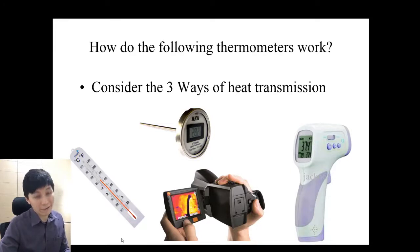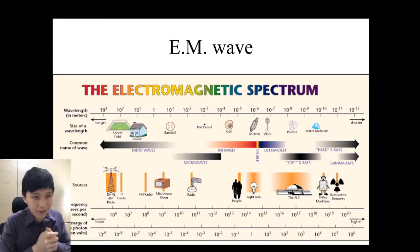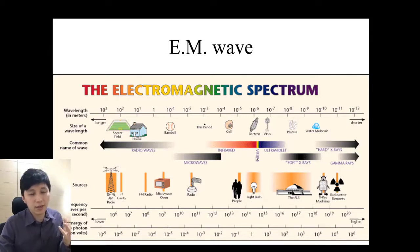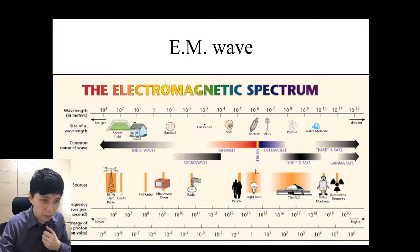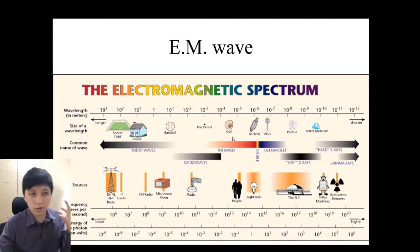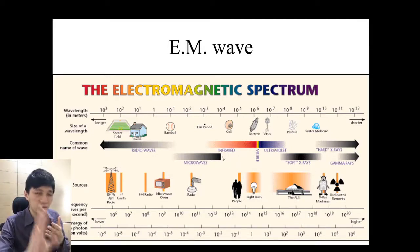Infrared radiation is part of the electromagnetic spectrum — you don't have to memorize it now, but you'll return to it in IGCSE next year. The visible light that allows us to see color is a very narrow portion of the spectrum. The infrared we're talking about is just beyond the red end of visible light — that's why it's called infrared, meaning beyond red.